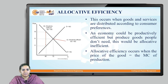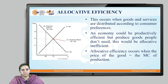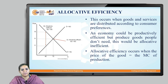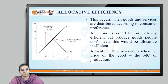Let us go to allocative efficiency. This occurs when goods and services are manufactured or distributed only as per customer preferences. An economy could be productively efficient but produce goods people do not need — in that case, it is allocatively inefficient. Looking at the graph with quantity Q on the X axis and price on the Y axis, point Q1 is where the price of the good equals the marginal cost of production — that is where the company is allocatively efficient.